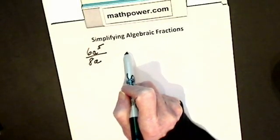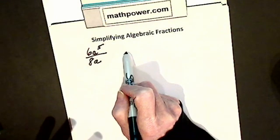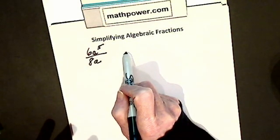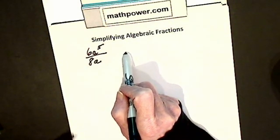We're going to work with algebraic fractions. First we have to simplify them, then we have to multiply and divide them, then we're going to add and subtract them.